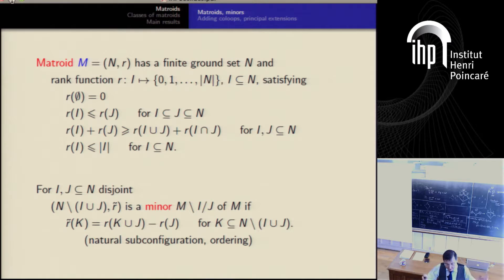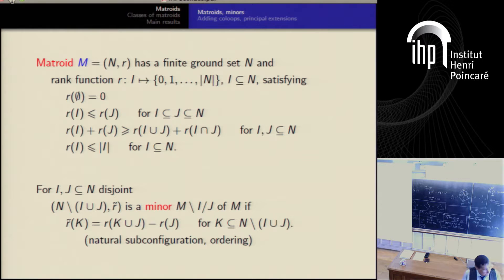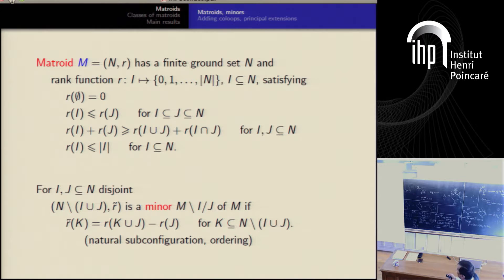And given two matroids, there is a partial ordering. If the smaller one is isomorphic to minor in the bigger one, then they are comparable in the ordering. And the question is, what is the ordering in the class of all matroids? And it's the same thing like with graphs. You know the famous result of the class of graphs close to minors have only finitely many minimal matroids, which are not in the class. They are called excluded, excluded configurations.